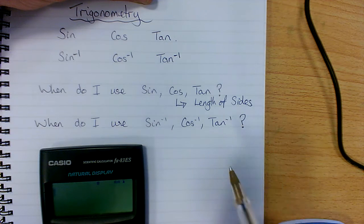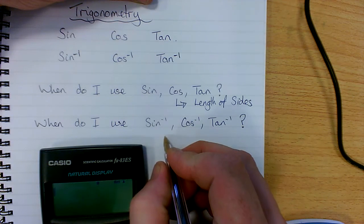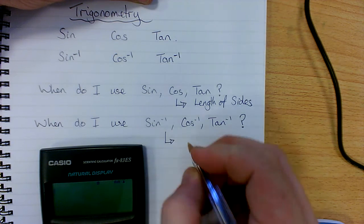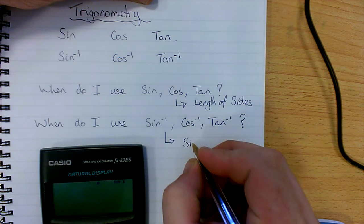So the sin to the minus one, cos, tan to the minus one, they are involved when we are looking at the size of angles.